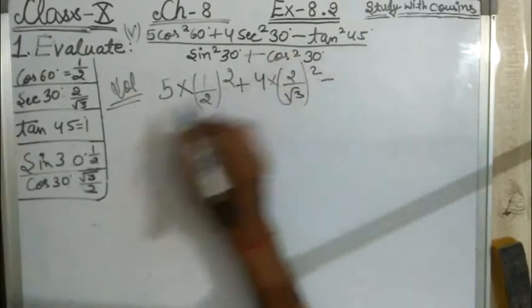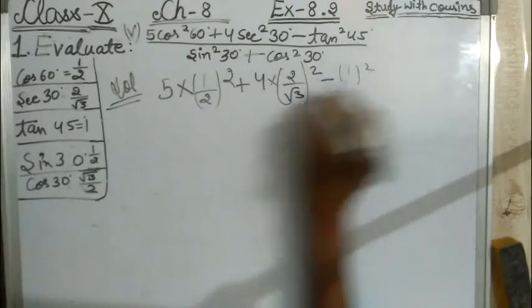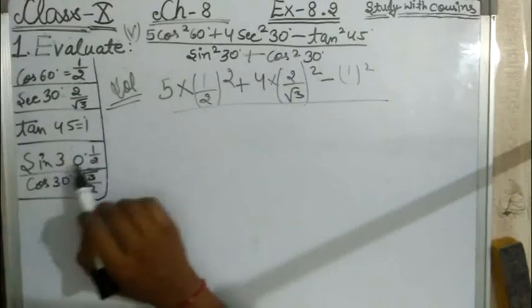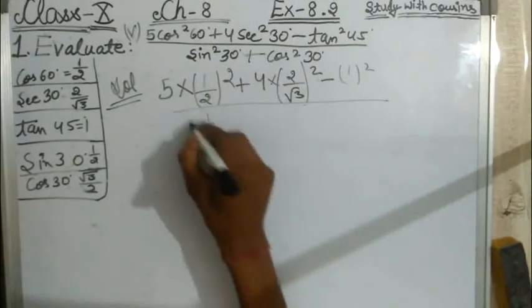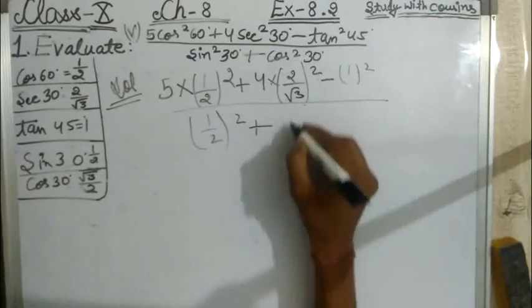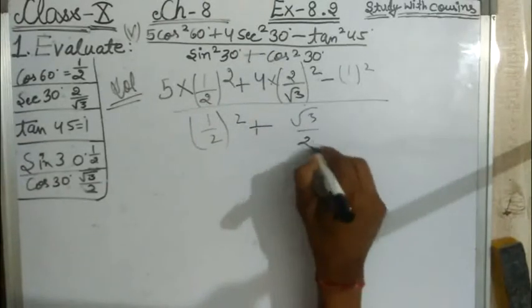Minus tan² 45°, so tan 45° is 1 squared. Now, sin² 30° is 1/2 squared plus cos² 30° is √3/2 squared.